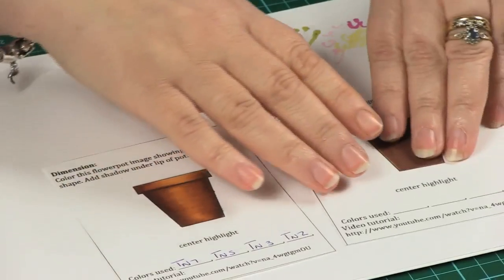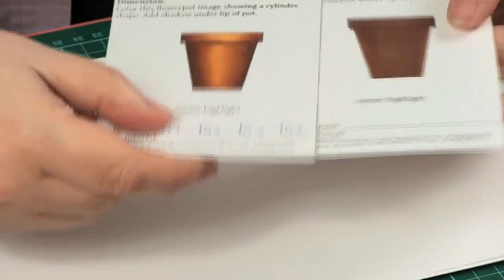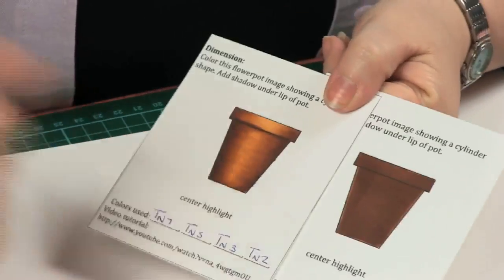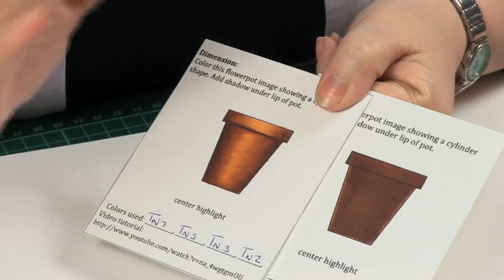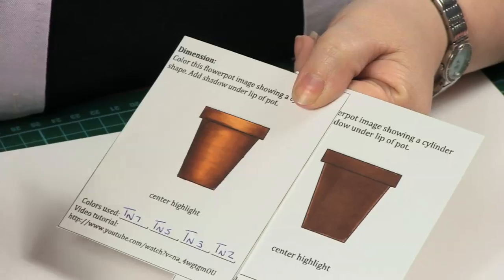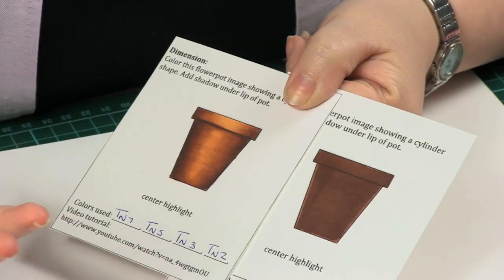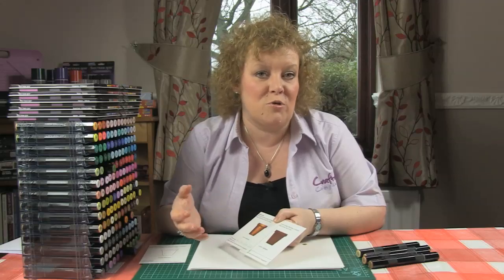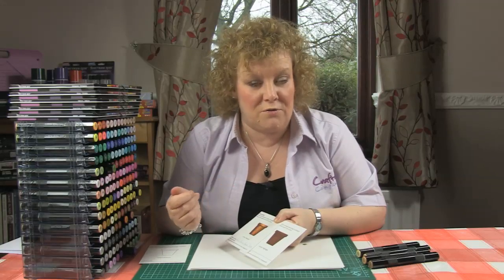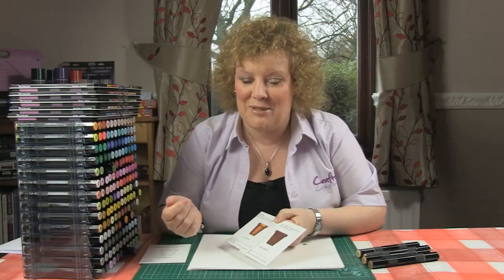The best way to explain that is to show you the two different examples I've got here of the same image. You can see here we've just got a basic plant pot, just a cylindrical shape. While we talk about that, please, if you haven't watched the Spectrum Noir DVD, take the opportunity because we do cover this in so much more detail for lots of different shapes, but for the purposes of your accreditation test this will do you absolutely fine.